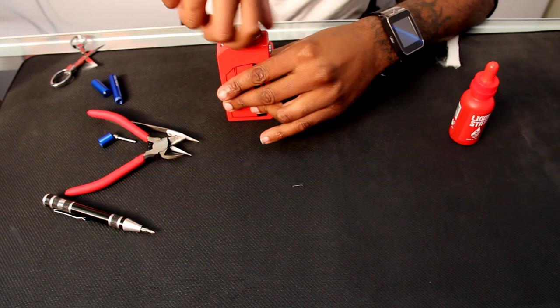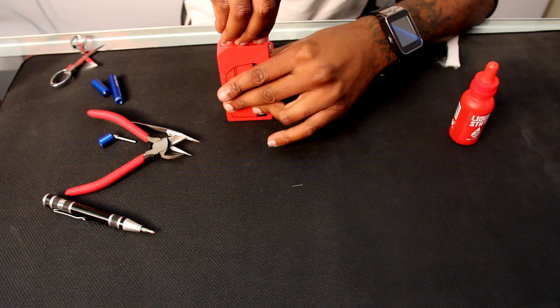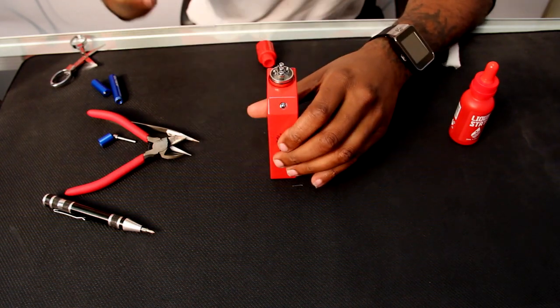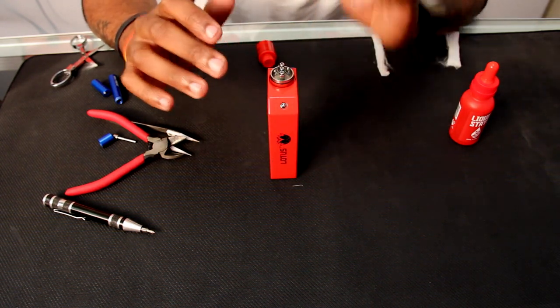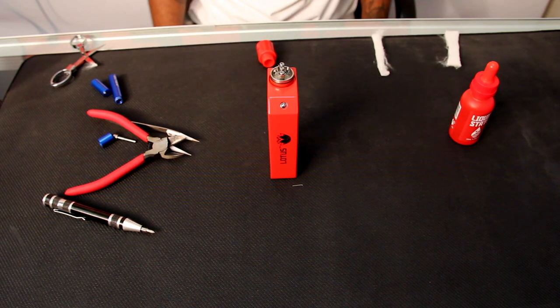The next step what we want to do, this is what I call the pulsating method. Some people like to torch their coils, I prefer the pulsating. Basically what I'm doing is I'm heating up the coils, I'm going to burn off any excess oils that my skin had put on there when I was touching the wire. Also I want to get my coils nice and compressed.